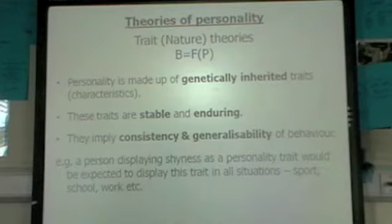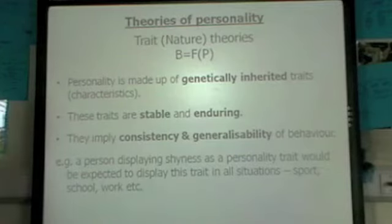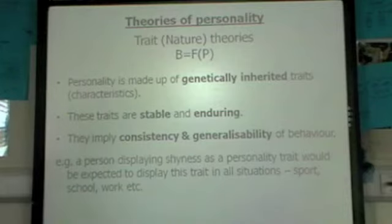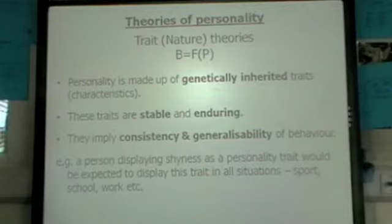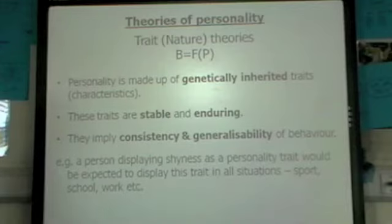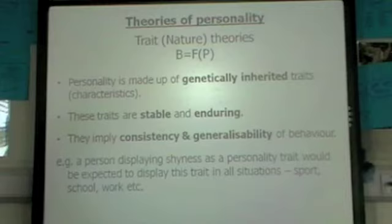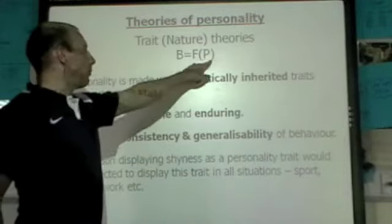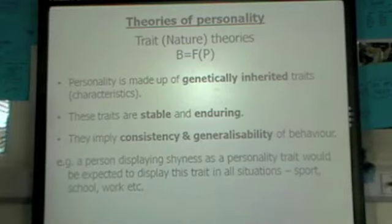This is A2 Sports Psychology revision starting with personality and individual factors. The first theory is trait theory, which is your nature theory, suggesting that we are born that way — your personality is genetically inherited. The key term is that behavior is the function of personality, expressed as B equals Fp.